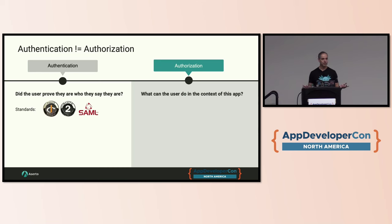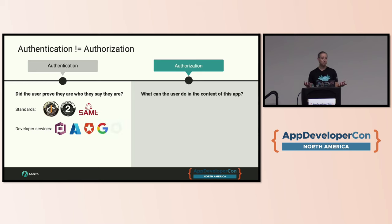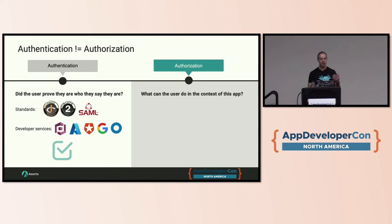Authentication is a fairly mature space. You know, 20 years ago we had SAML — some of my teams worked on SAML back when I was at Microsoft. We've had OpenID Connect for 11 years now, OAuth 2 for about 15. It's a mature space, and you have a set of developer services that mean you don't have to build authentication yourself — you can choose Cognito, Auth0, Okta, or Azure Active Directory. This is a solved problem. Whereas authorization is not a solved problem.